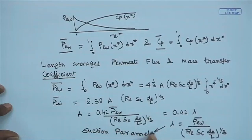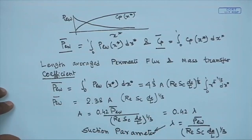The suction parameter λ indicates that the wall is really porous. If the wall is impervious, P_w = 0 and λ = 0. For an impervious conduit with no wall porosity, P_w = 0. On the other hand, if there is wall suction there is a definite value of P_w̄ and a definite non-zero value of λ. In the presence of a membrane, λ assumes a definite non-zero value.